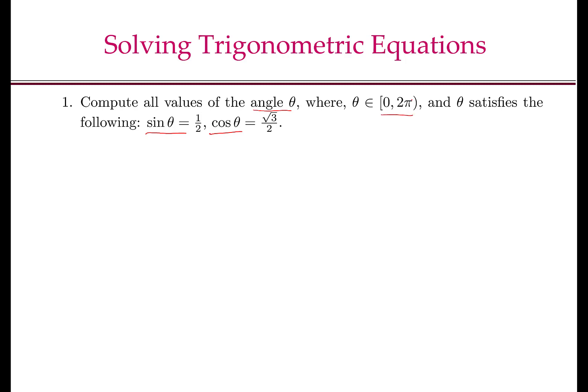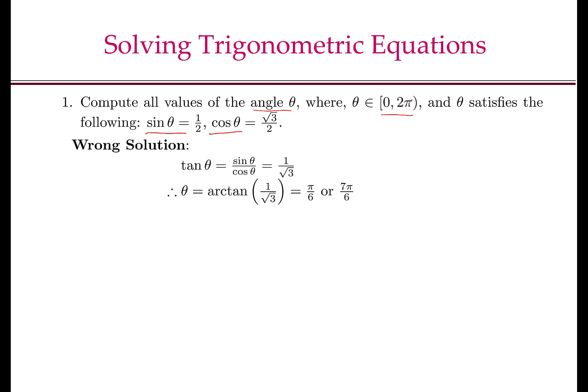Let us now look at one common way to solve the problem which is actually a wrong solution. What you may do is note that tan theta equals sin theta by cos theta, which gives 1 by square root of 3 if you substitute sin theta equal to half and cos theta equal to root 3 by 2. Therefore, theta will be arc tan of 1 by square root of 3, which will give you the solution pi by 6 if you use a calculator. And then you know that tan is also positive in the third quadrant, so some of you may also give the solution of 7 pi by 6.